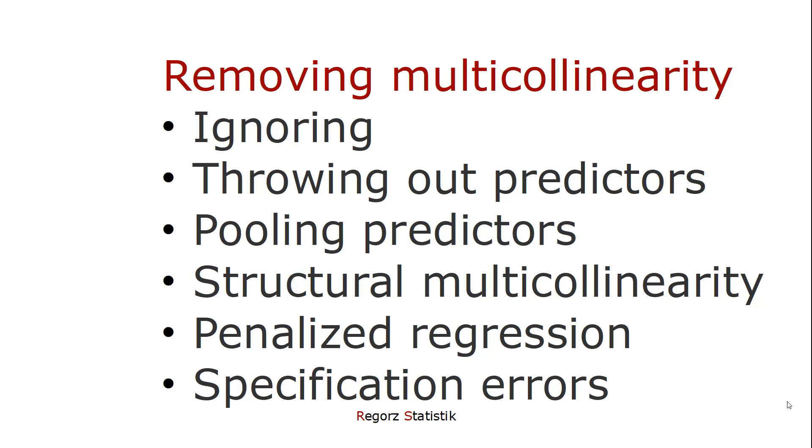There are several options for removing multicollinearity. You could ignore it. In many cases, that's the best option. You could throw out predictors, pool predictors, or find ways for addressing structural multicollinearity. You could use penalized regression, that is, ridge regression or lasso regression. And you could not make specification errors. We'll be looking at all those six options.